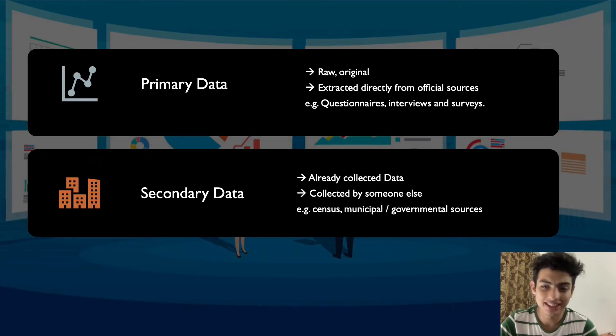First up, I'm really sorry to all the stats enthusiasts. This might be too familiar and boring to them. But just a general recap on what's primary and secondary data. Primary data is raw, the original data that is directly collected from official sources in the form of surveys and questionnaires. While secondary data is data that has already been collected by someone else and we are only using it for further treatment or inferences.